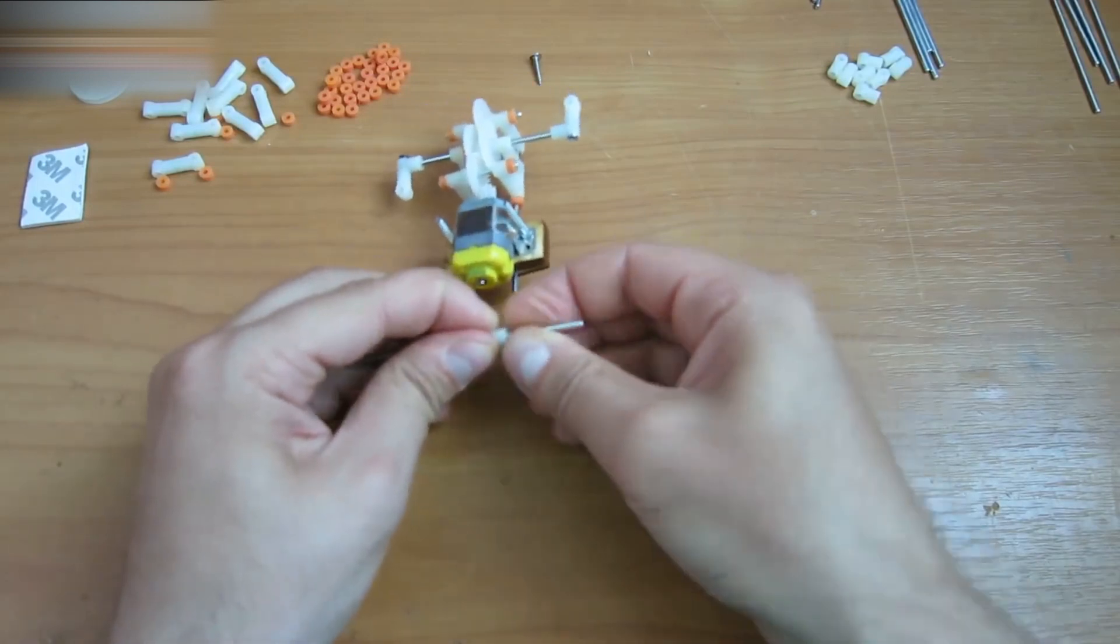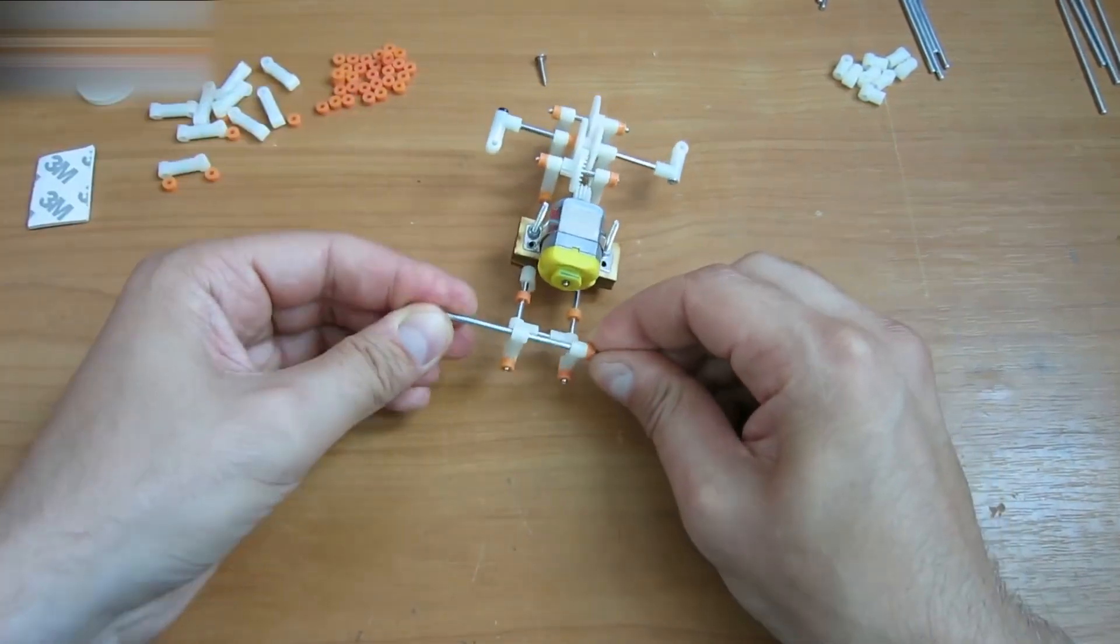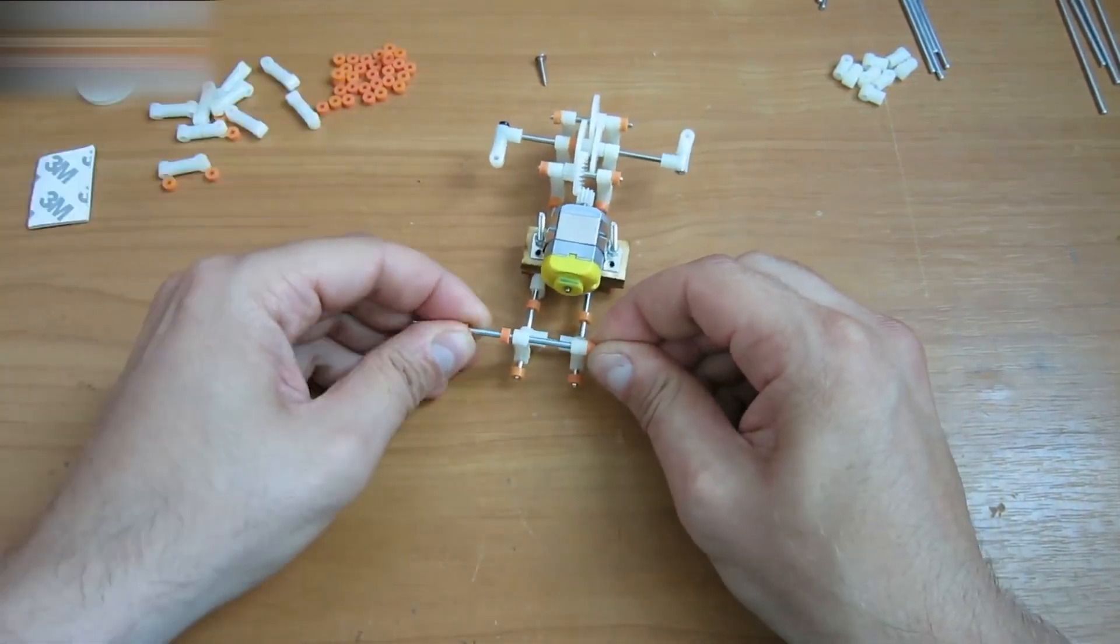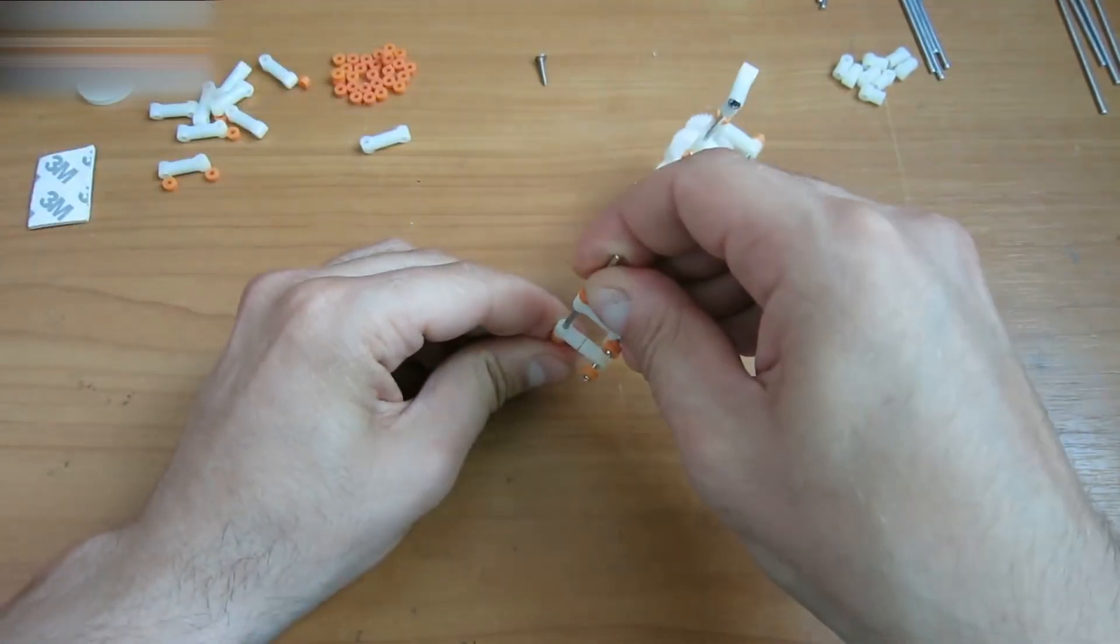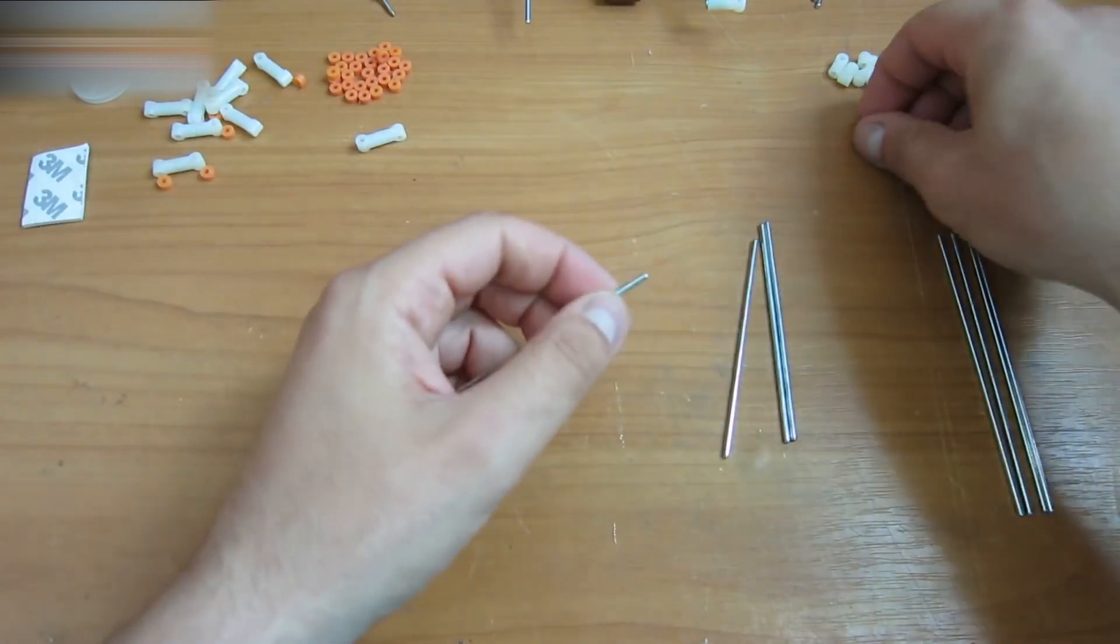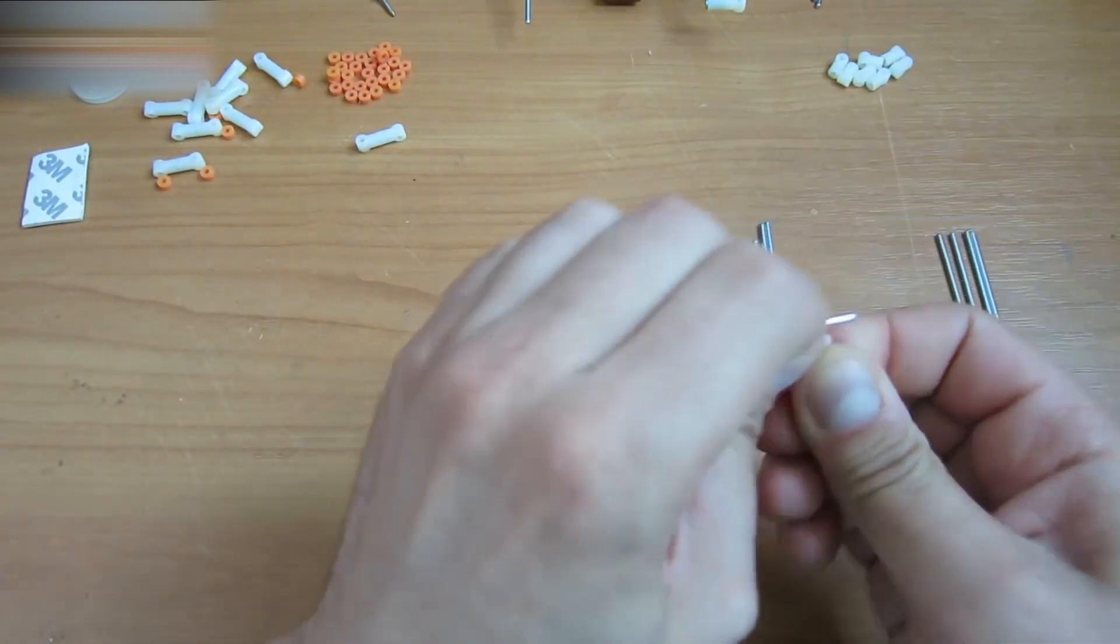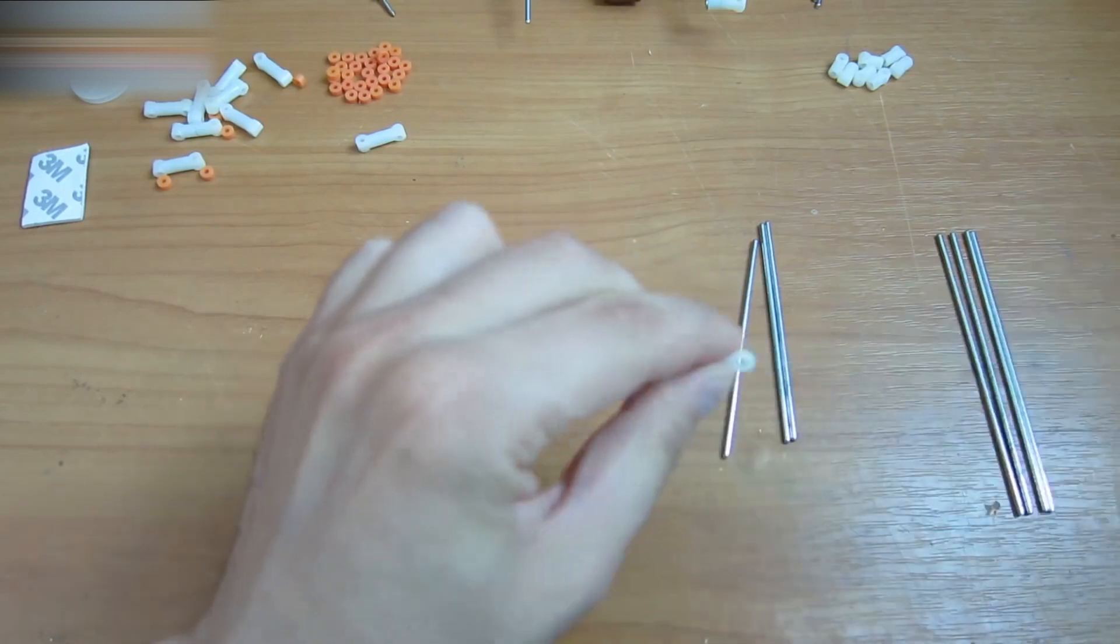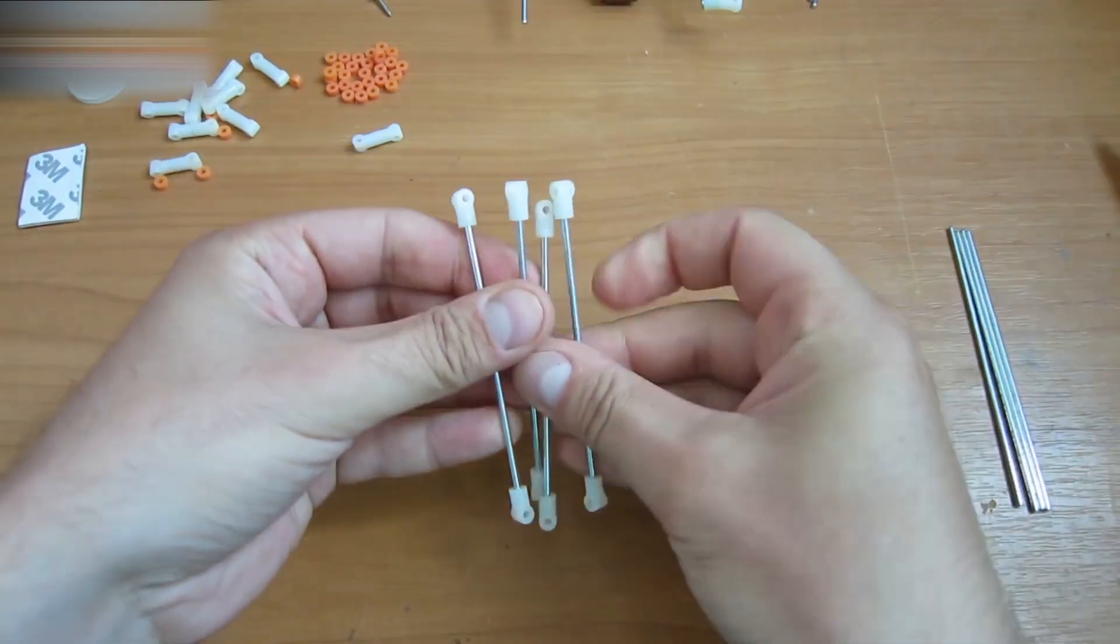Assemble front leg supporters. You should have four short and four long leg parts now. Put the white elements onto the short leg parts. They should look like this.